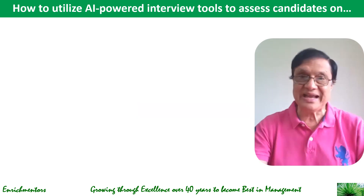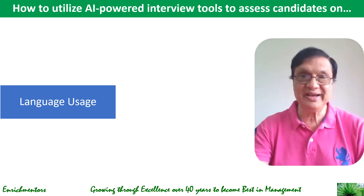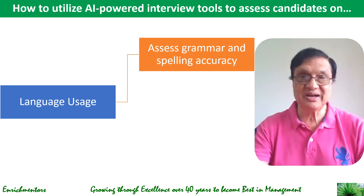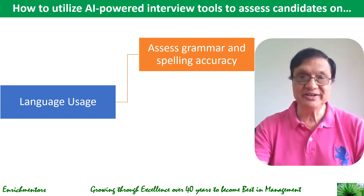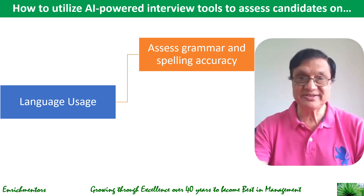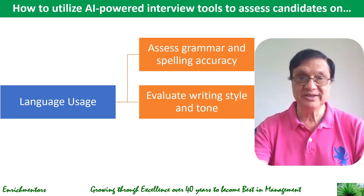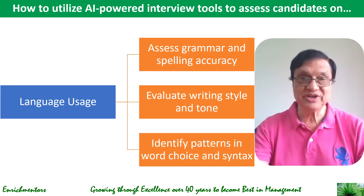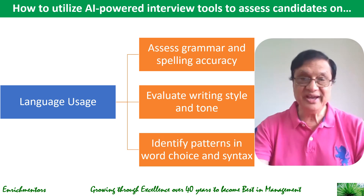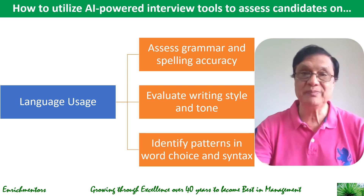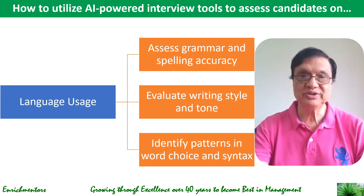The next area is language usage, where AI can help in several ways. First, AI can assess a candidate's grammar and spelling accuracy to identify potential errors, ensuring the candidate can communicate effectively in writing. Second, AI can evaluate candidates' writing style and tone to assess their professionalism, clarity, and ability to adapt their writing to different audiences. Third, AI can help identify patterns in word choice and syntax to assess their overall writing style and communication preferences, giving better understanding of how they would use language in a professional setting.